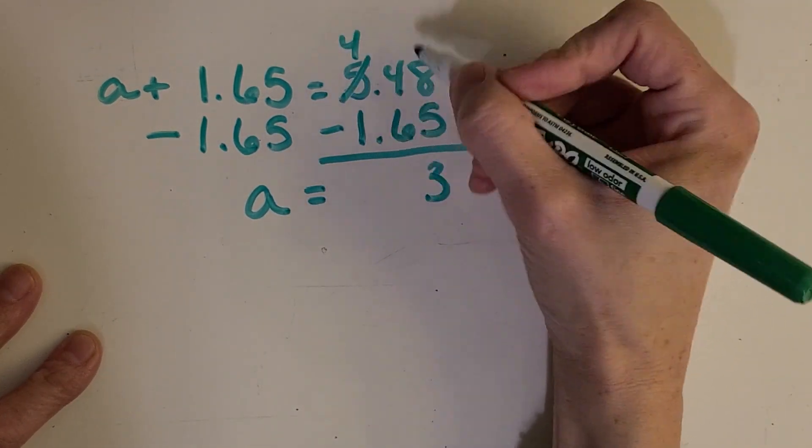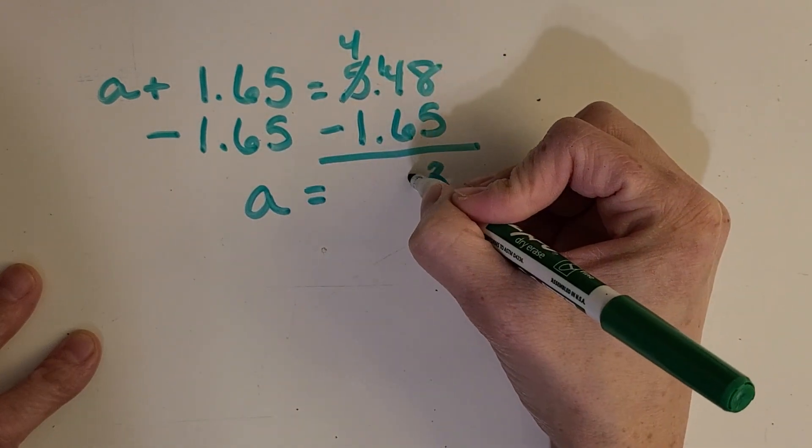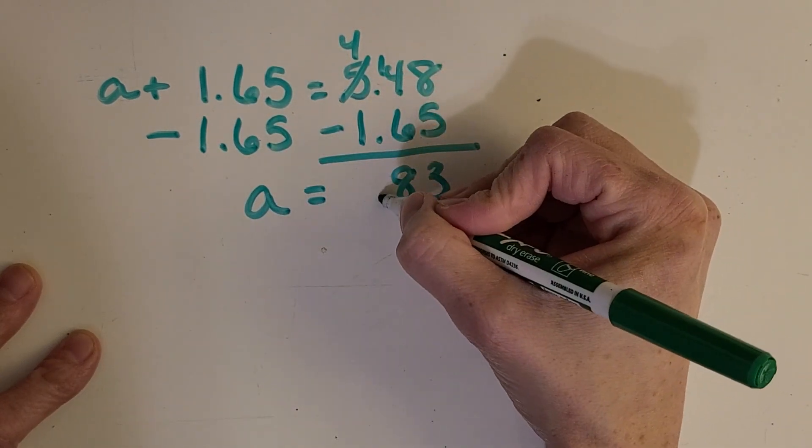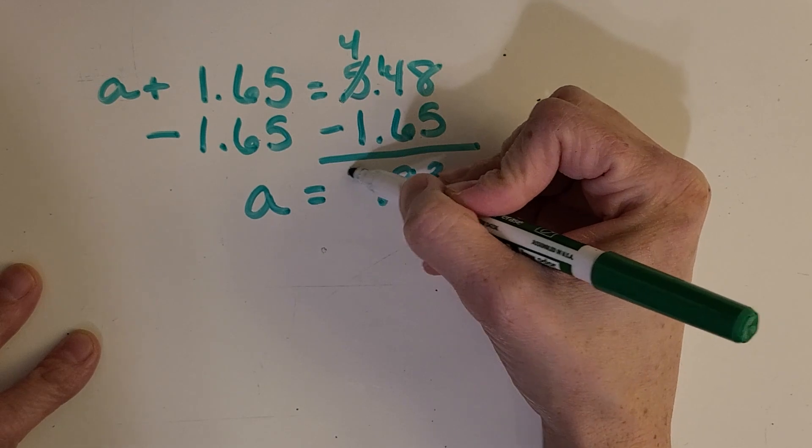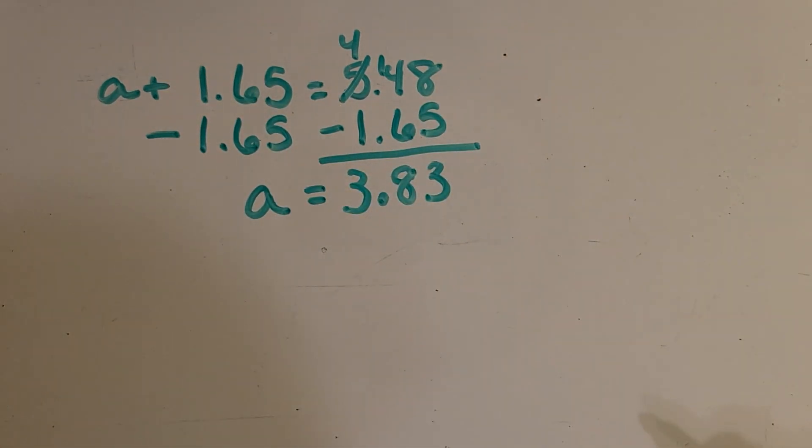So I'll have to do some regrouping. Bring down the decimal point. So now I have that A equals 3 and 83 hundredths.